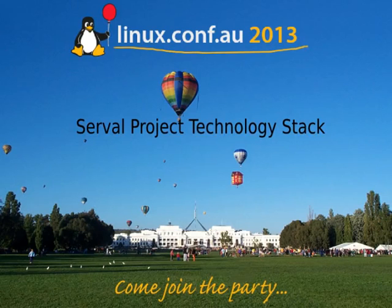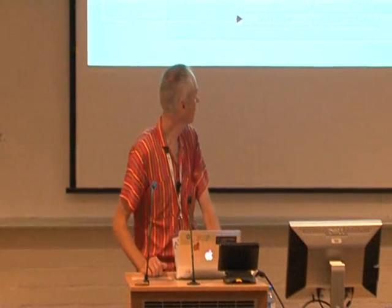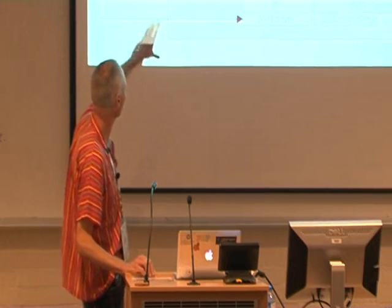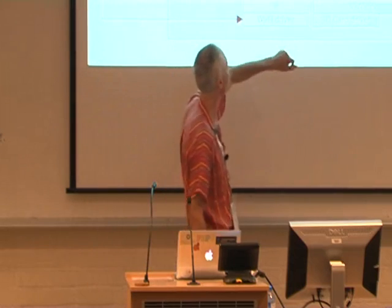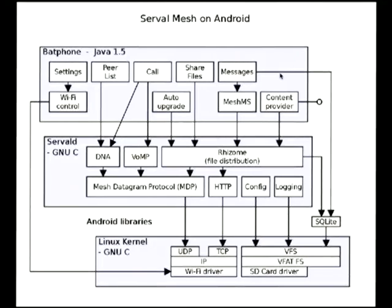So how did we build this wonderful Serval Mesh software that we've got today? This is a diagram of the system architecture of Serval Mesh running on an Android system. As I explained earlier today, we've got Linux kernel and everything uses Linux kernel via the Android system libraries. We have this component which is basically the common component of everything that we're building - all of our core Serval functionality, all of the core code is in this thing which we call ServalD, which is the daemon.